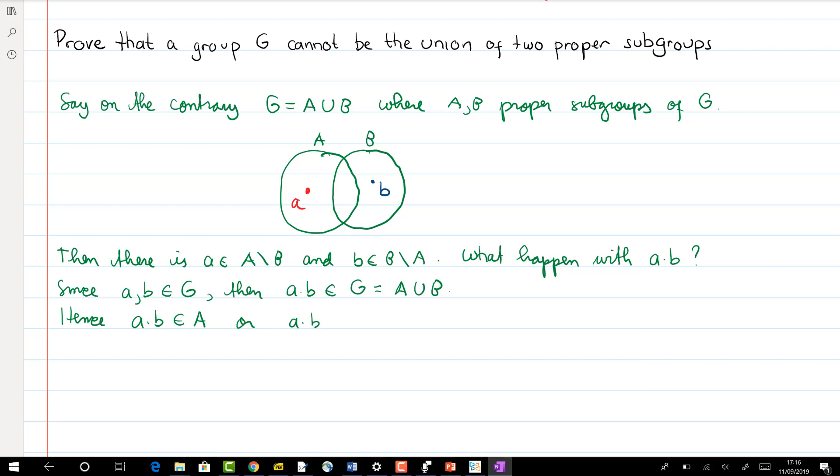That's the only option we have. Now if ab is in A, we can write a times b is equal to some x in A. Remember that a is an element in A, hence a inverse is also an element in A. So if we multiply with a inverse to the left, then we have b is equal to a inverse x, which is an element in A.